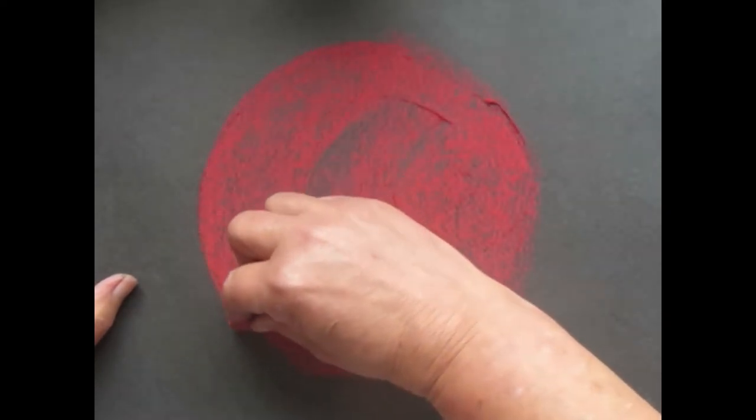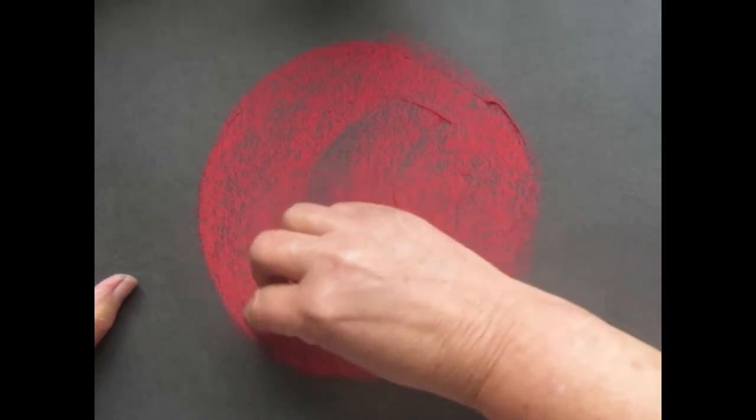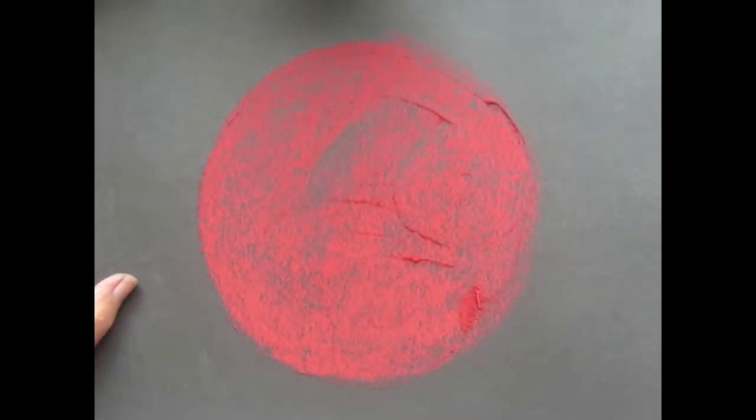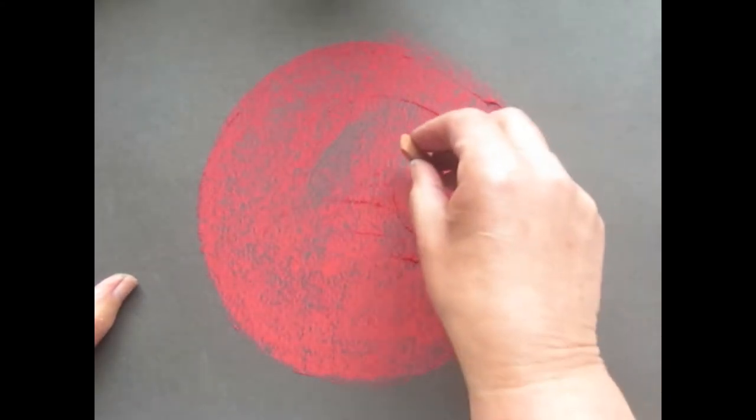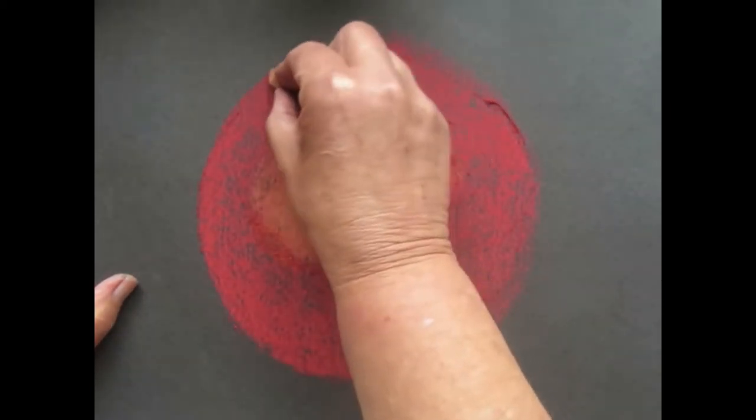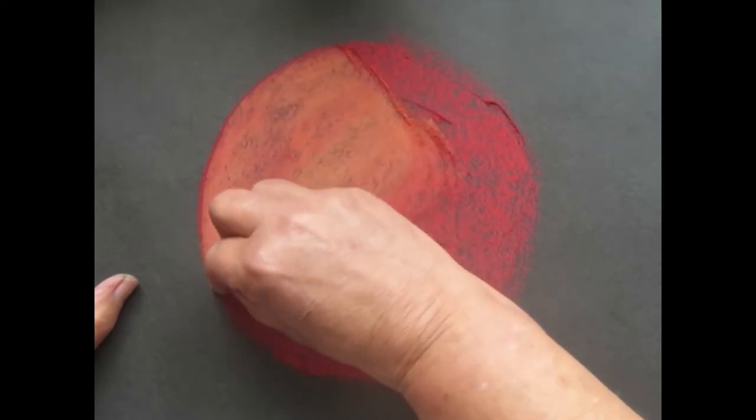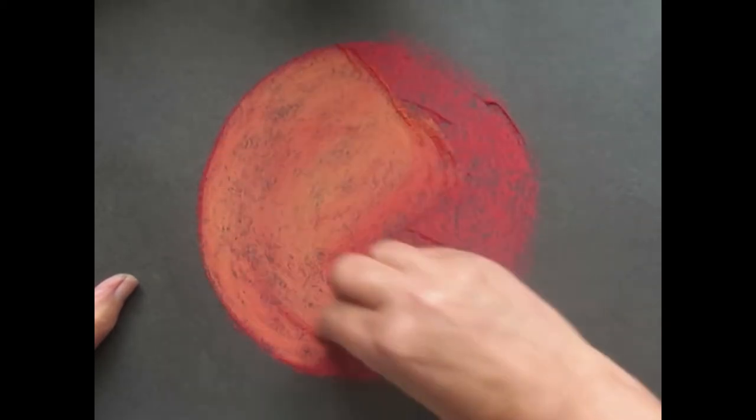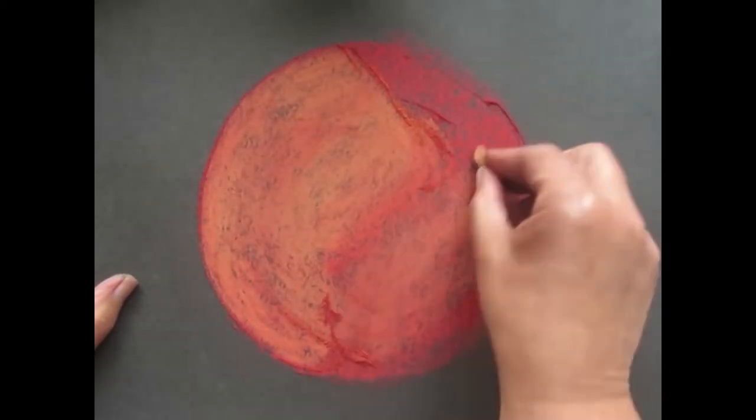The pastel creates dust, which really is as fine as the Martian dust on the actual planet. Here I'm overlaying the red with a little tan color to create the rusty color of the Martian surface.